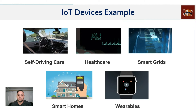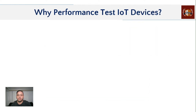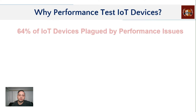Now let's think about why we have to performance test IoT devices. On the surface it looks like everything works fine — so why do we have to test it? You'll be surprised to know that close to 64% of devices have one or another performance issue. It's not only about one device working properly — it is an ecosystem by itself.